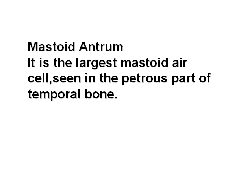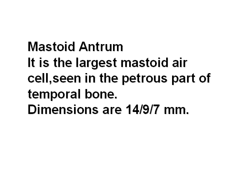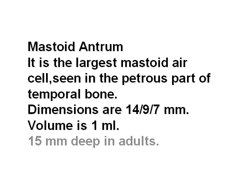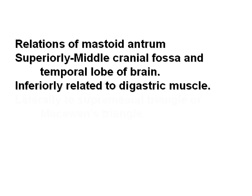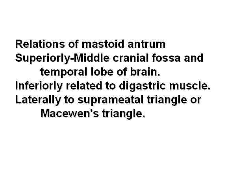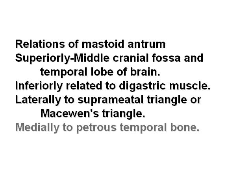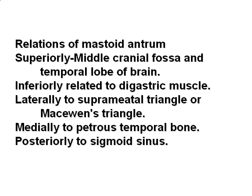The mastoid antrum is the largest mastoid air cell in the petrous part of the temporal bone. Its dimensions are 14 x 9 x 7 mm, its volume is about 1 mL, and it is 15 mm deep in adults. Its relations are: superiorly — middle cranial fossa and temporal lobe; inferiorly — digastric muscle; laterally — suprameatal (MacEwen's) triangle; medially — petrous temporal bone; posteriorly — sigmoid sinus.